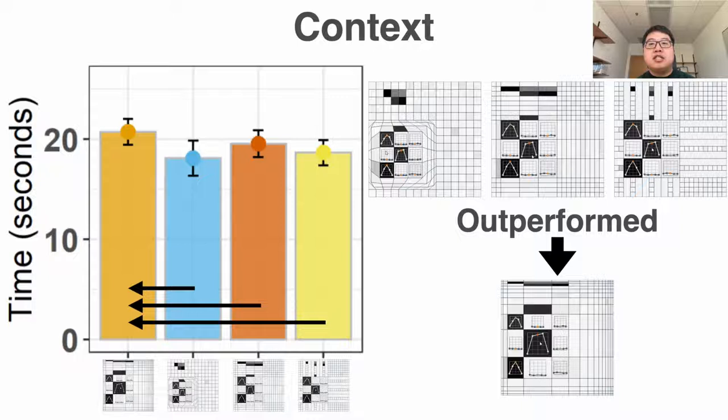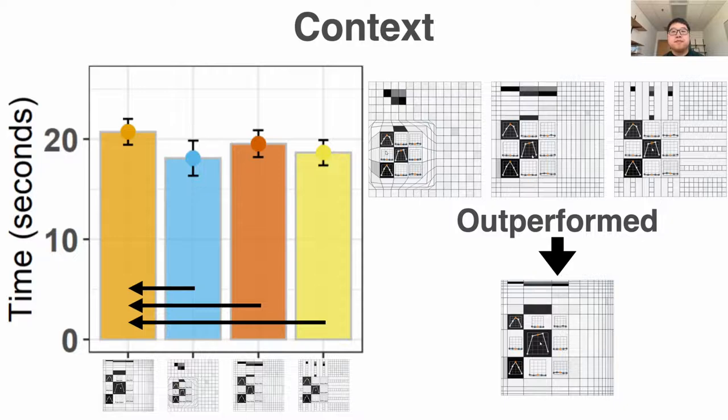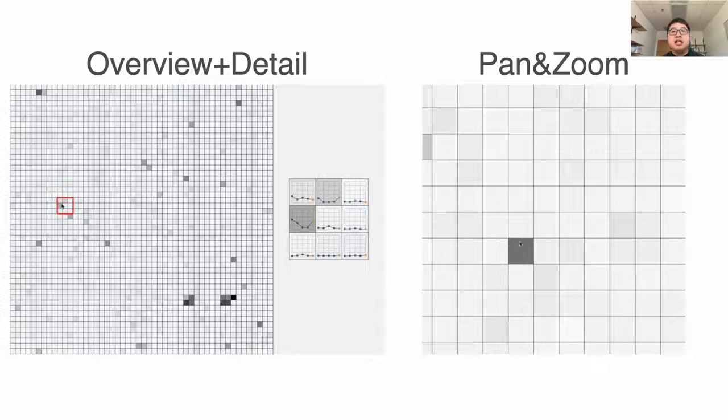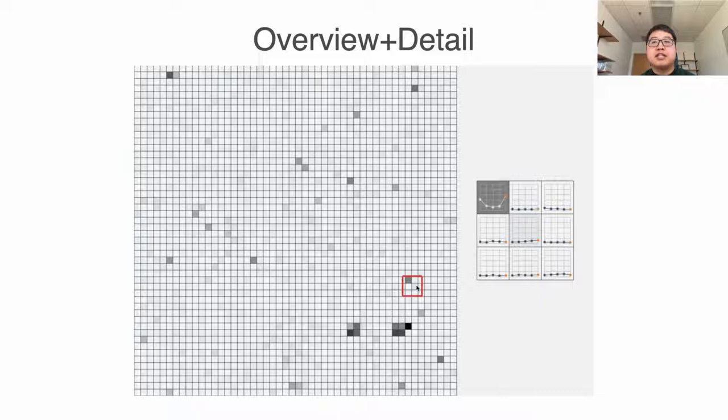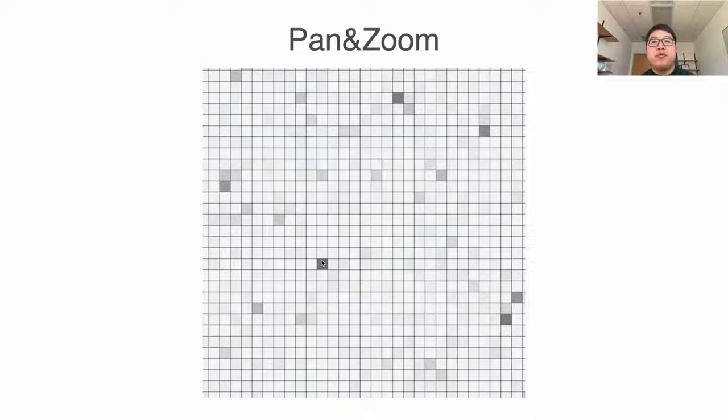Lenses are not the only interaction techniques that can reveal details. There are other two widely used interaction techniques: overview plus detail and pan and zoom. In overview plus detail, we allow the user to show the details in a separate view. In pan and zoom, the user can zoom in to reveal the hidden details and then can zoom out for an overview.